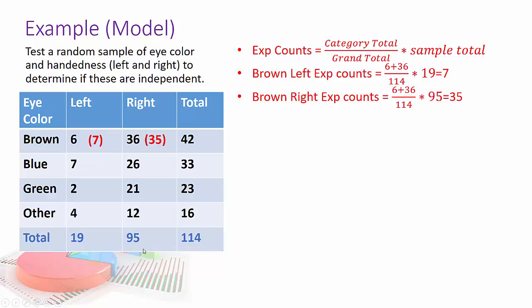My expected counts, and this is where I'm going to go into more detail than I did in my last video, is basically my category total. So, say, brown is 42, divided by my grand total, which is for all the parts of the sample, times the sample total. So in this case, if I'm doing left brown eyes, my sample total is 19, times 42, divided by 114. So there's my 42 and 114. There's my 42, 114, there's my sample total. And I get 7. I'll do the same thing for the right. So that total is still 42, divided by 114. This time I'm multiplying by 95, and I get 35.